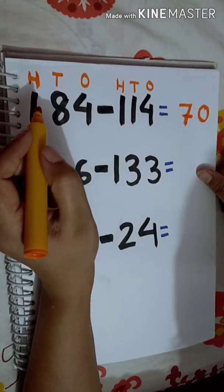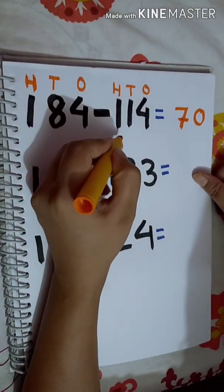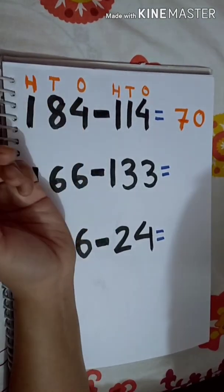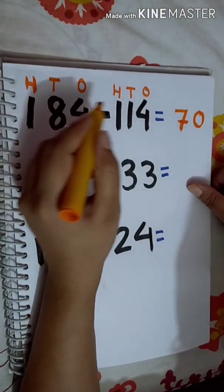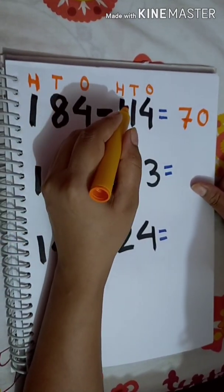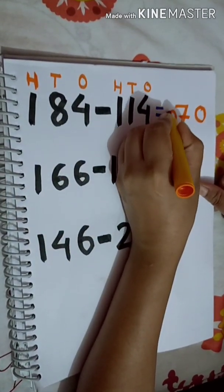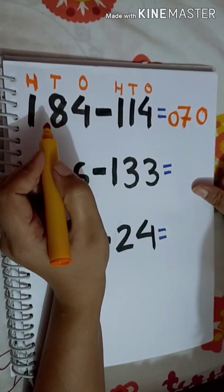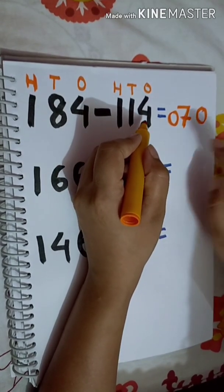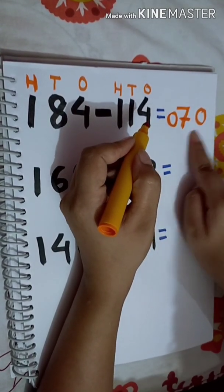Now I will subtract the 100's digit: 1 minus 1. Using the property of subtraction, 1 minus 1 is equal to 0. So 184 minus 114 is equal to 70.